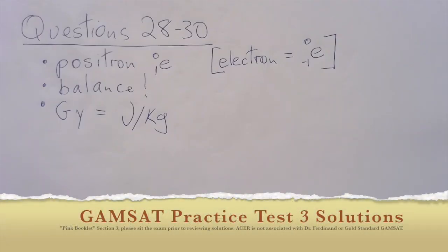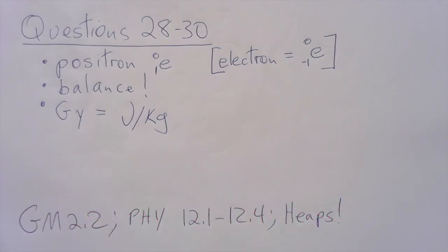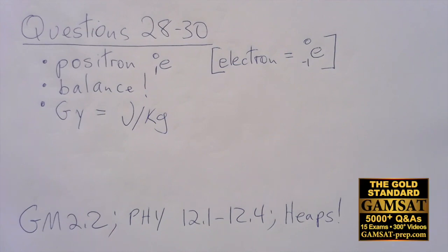Questions 28 to 30. This is positron emission tomography, which is indeed used in hospitals along with nuclear magnetic resonance and many other imaging techniques. It's talking about positrons, and it defines a positron as e01.